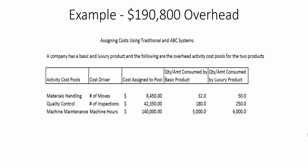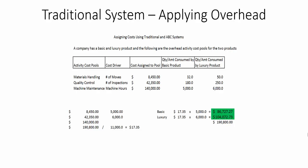In this example, we have a total overhead cost bucket of $190,800. We have two product lines and different cost pools. In a traditional system, we're choosing to use just machine hours as the way of allocating this overhead cost pool to the product lines. To come up with the rate, you take $190,800 of total overhead divided by 11,000 machine hours — 5,000 for the basic product and 6,000 for the luxury — giving a rate of $17.35.